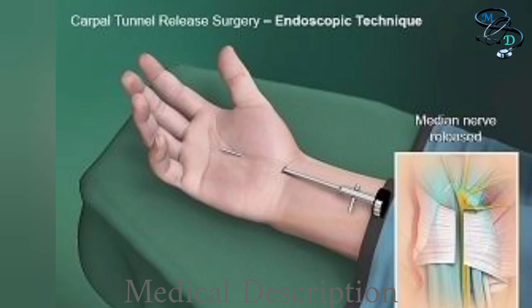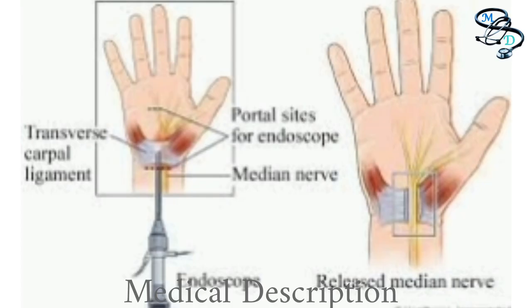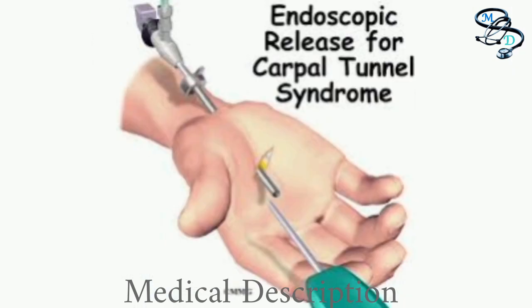In endoscopic surgery, the surgeon uses a telescope-like device with a tiny camera attached — an endoscope — to see inside the carpal tunnel, and cuts the ligament through one or two small incisions in the hand or wrist. Some surgeons may use ultrasound instead of a telescope to guide the tool that cuts the ligament. Endoscopic surgery may result in less pain than open surgery in the first few days or weeks after the procedure.